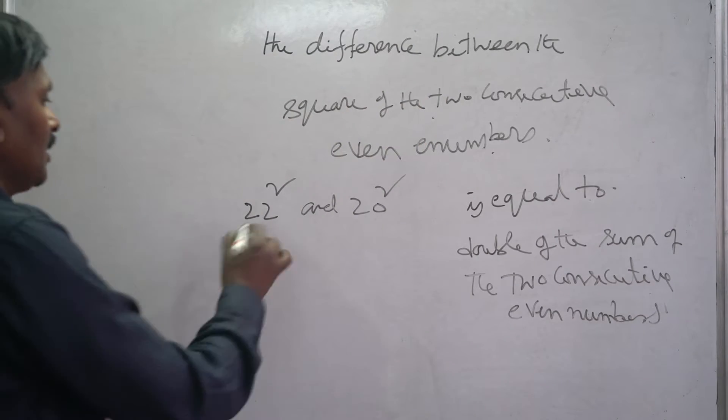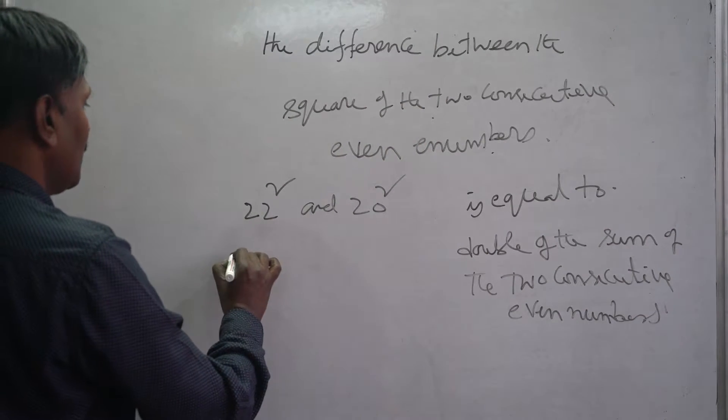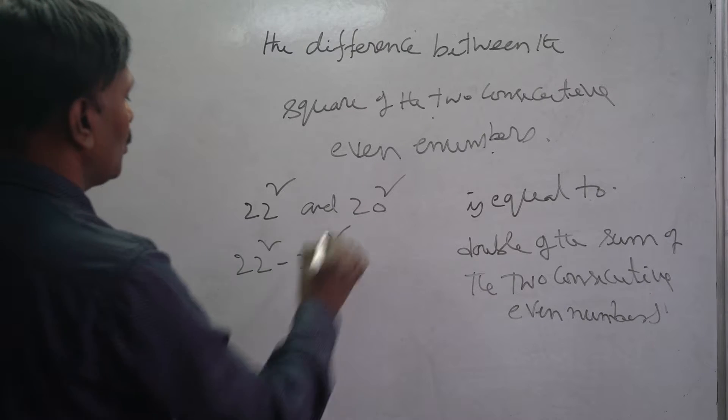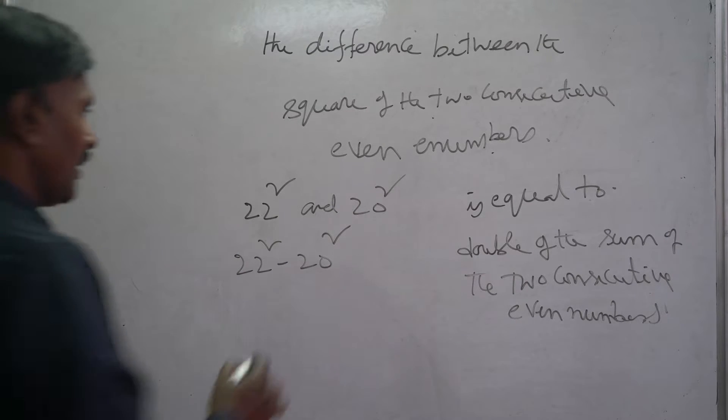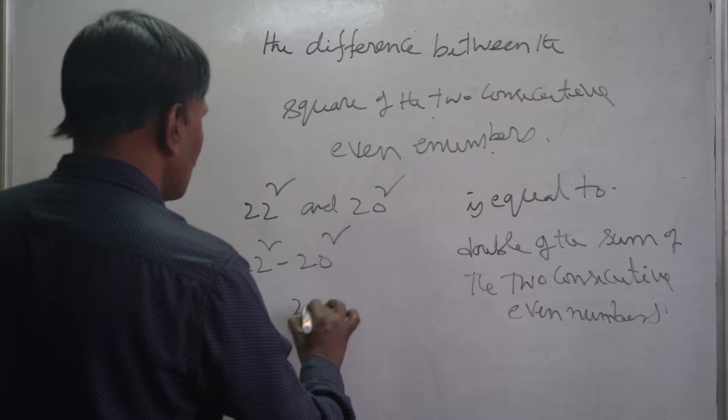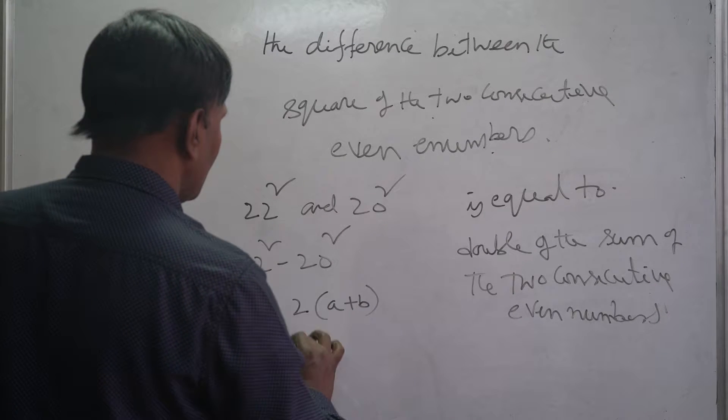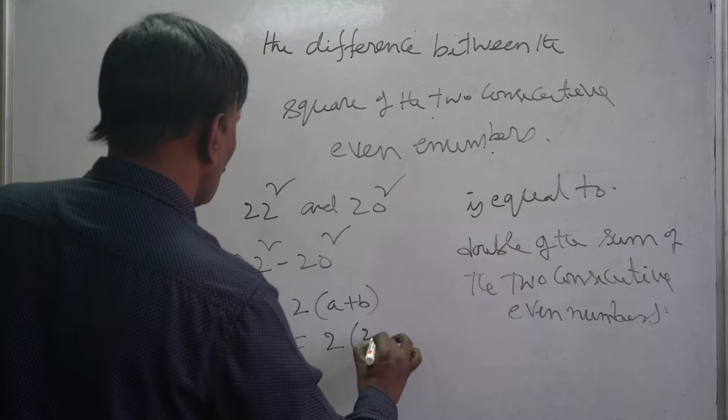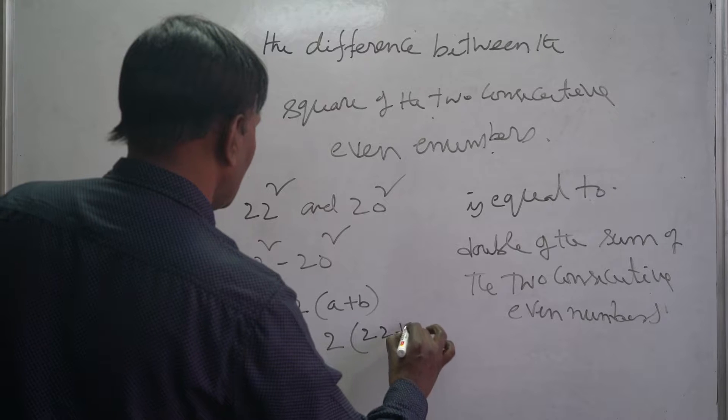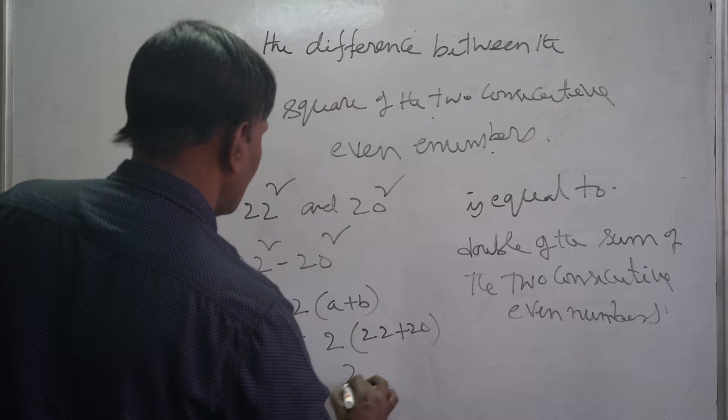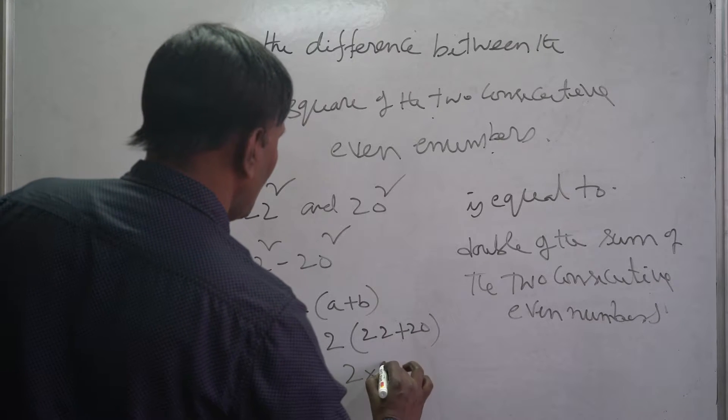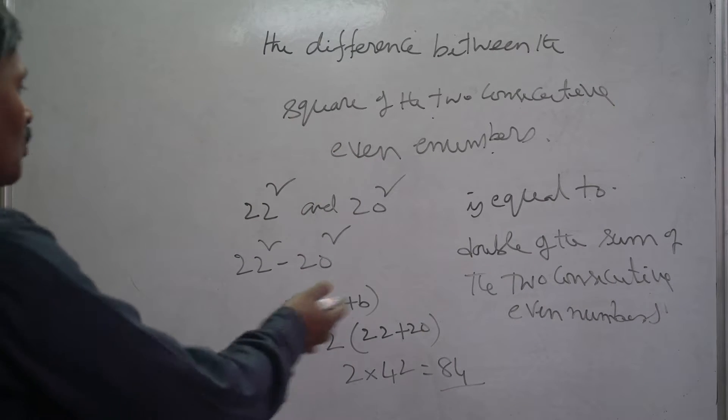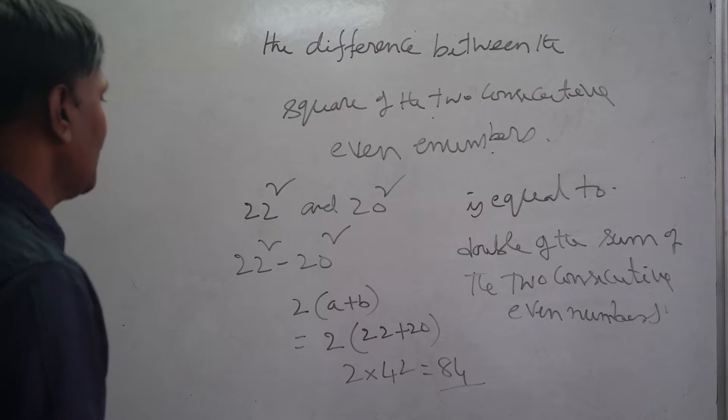You should remember this. So it means 22 square minus 20 square. To know this one directly, you can write it 2 into a plus b. So it means 2 into 22 plus 20. This is 2 into 42, this is 84. So that is the output of this type of problem.